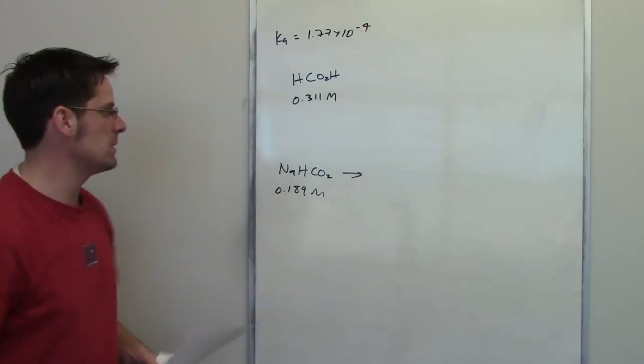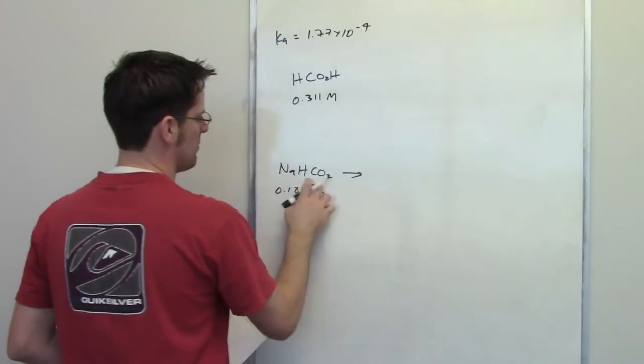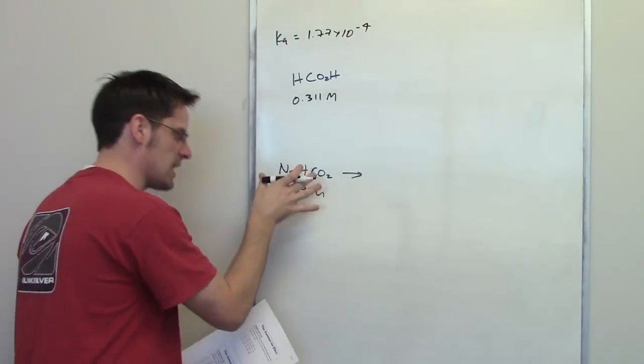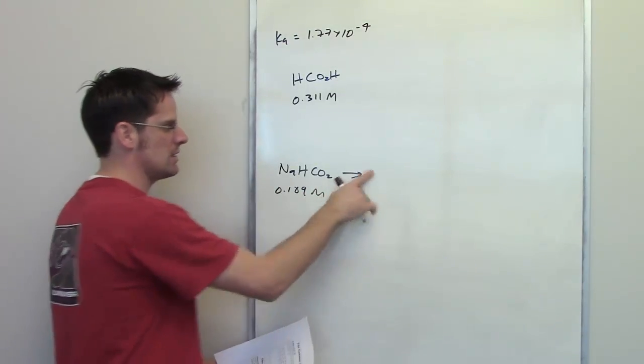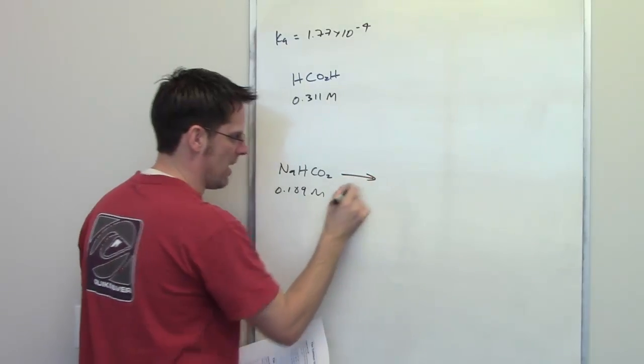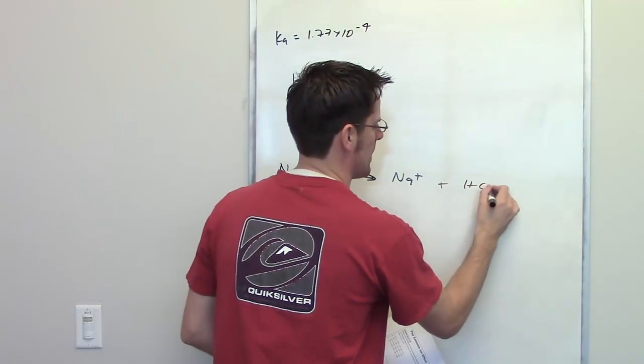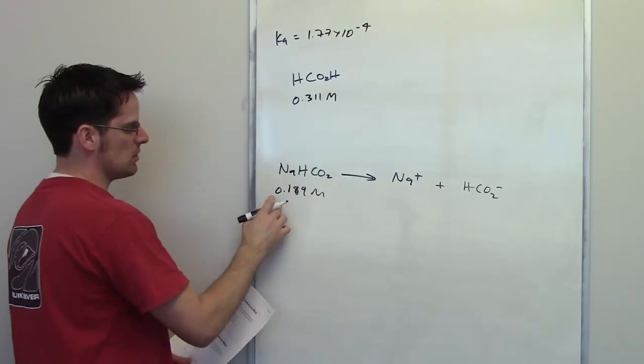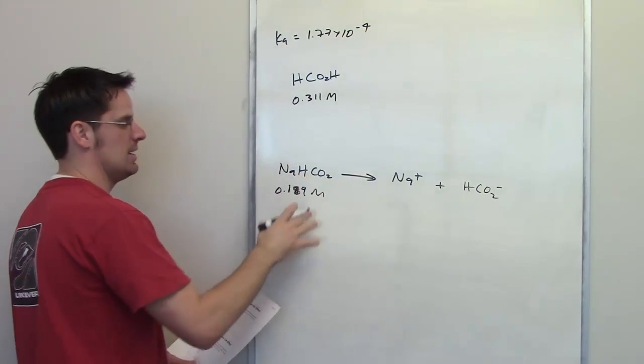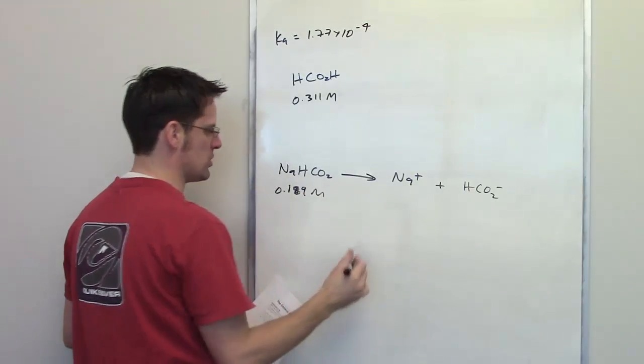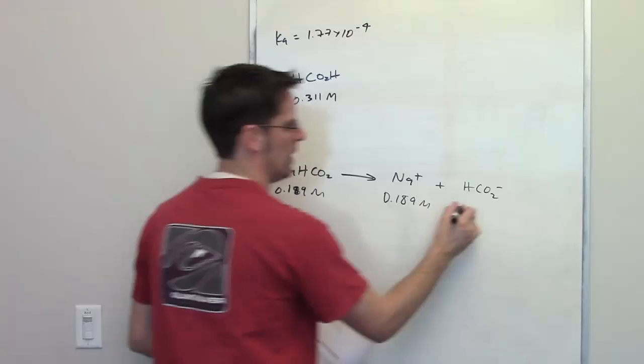This is very much like the problem that we just did, but I'll go ahead and show you how to do it. Sodium formate is a very strong electrolyte, that is, it's an ionic compound that's very soluble in water, which means it's going to dissociate virtually 100%, with a one-way arrow into its separate ions, sodium and hydrogen formate. Because we're starting out with 0.189 molar sodium formate, and this dissociates completely in a one-to-one-to-one ratio, the final concentration of each of these ions is also going to be 0.189 molar.